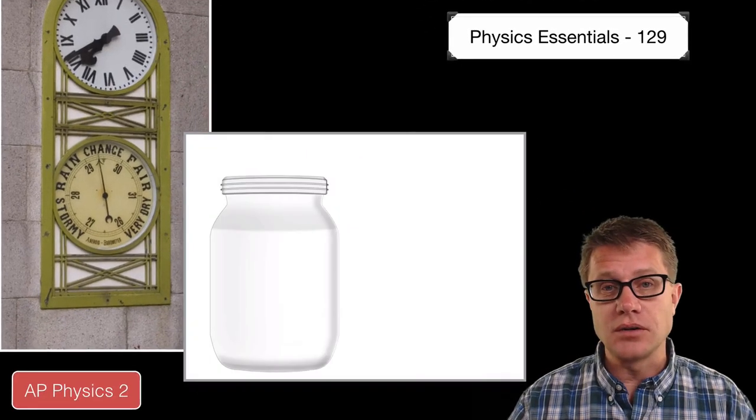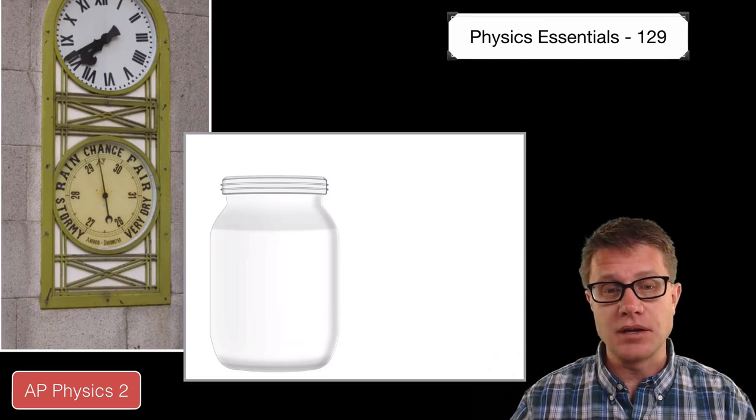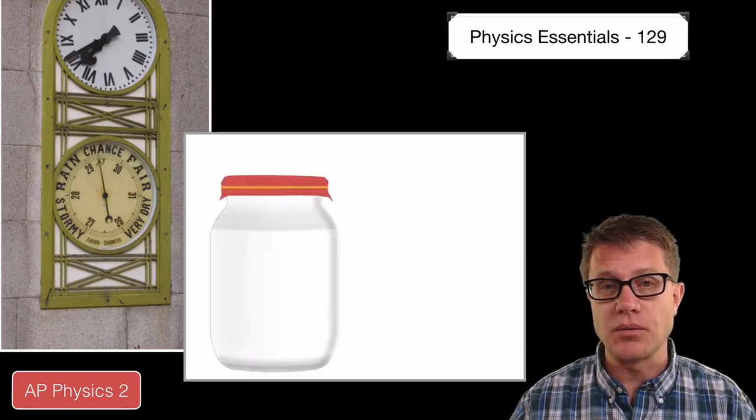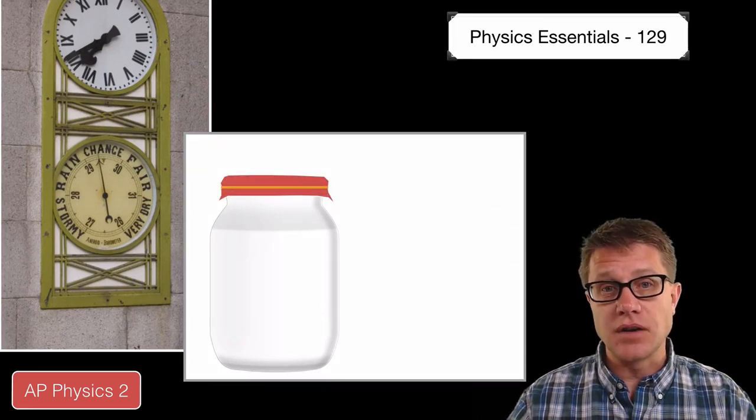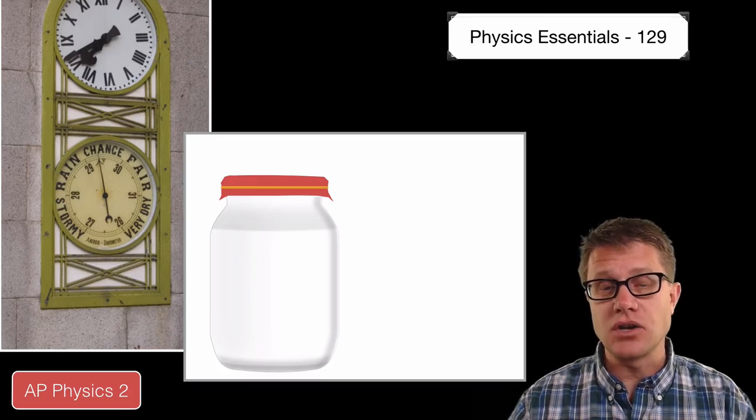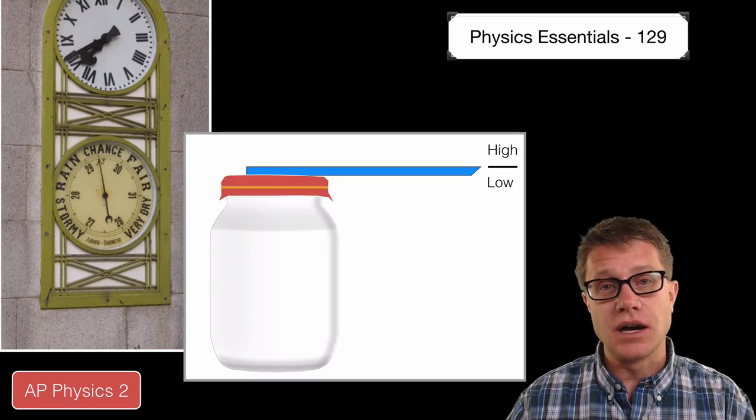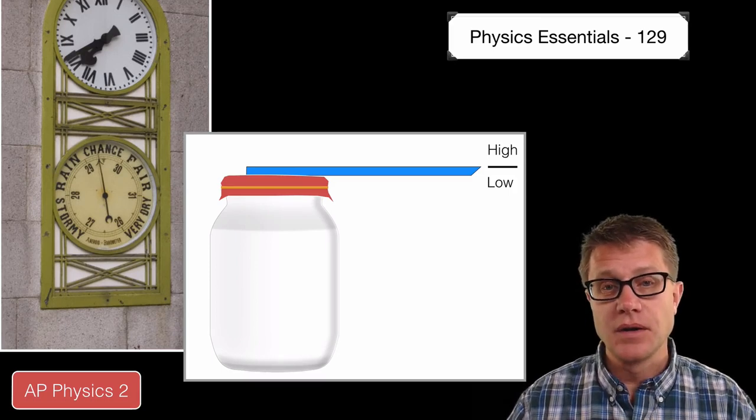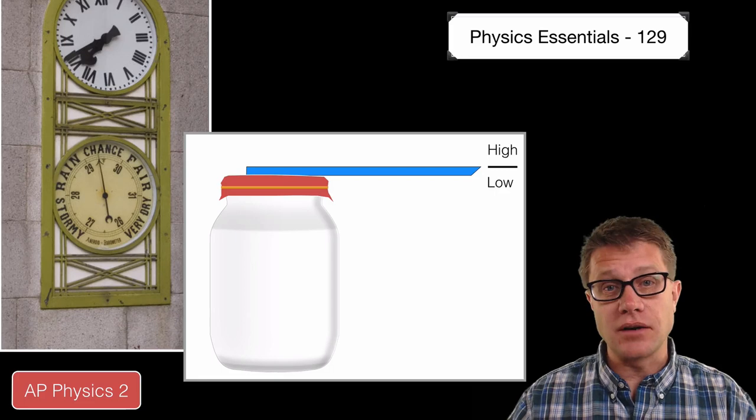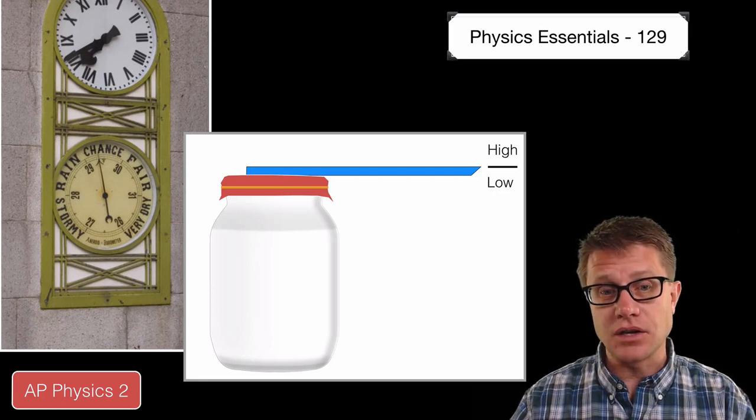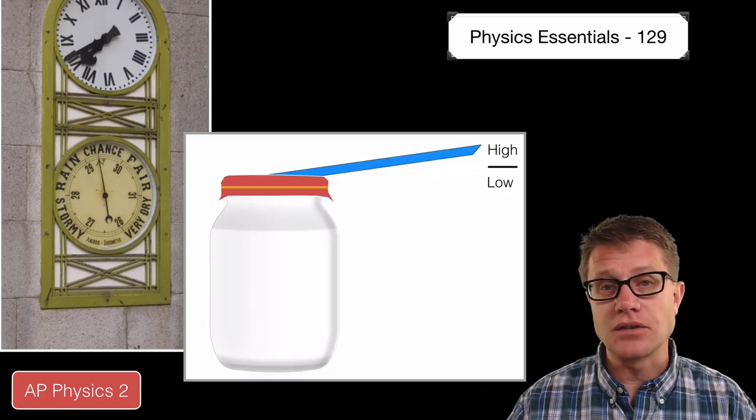Now you could build a barometer if you wanted to. All you do is take some gas, trap it in a container. We could use a balloon with a rubber band over the surface of it. So you have got a set amount of gas inside the jar. We could then take a straw to the top, mark some high and low points on a piece of paper behind the barometer. And then as the air pressure outside the jar increases it is going to be pushing down, and so that straw is going to go up.